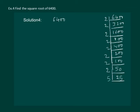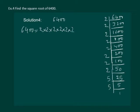Dividing by 5 gives 25, then 1. So we can write 6400 as 2 × 2 × 2 × 2 × 2 × 2 × 2 × 2 × 5 × 5. Now let us pair them: one pair of 2s, second pair, third pair, fourth pair, and a pair of 5s.